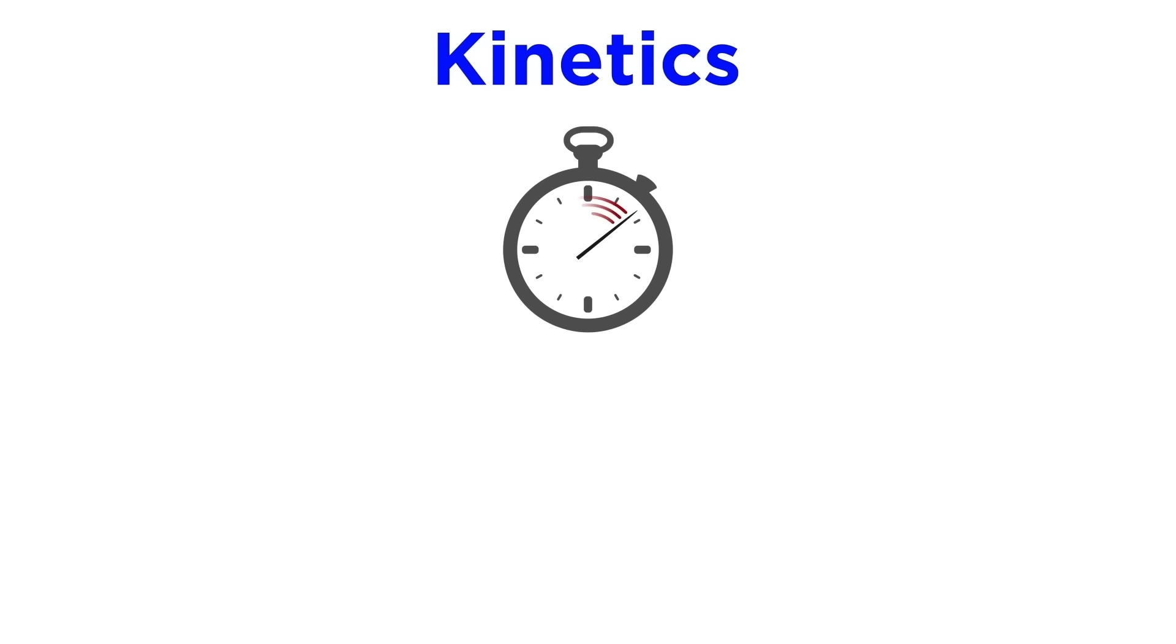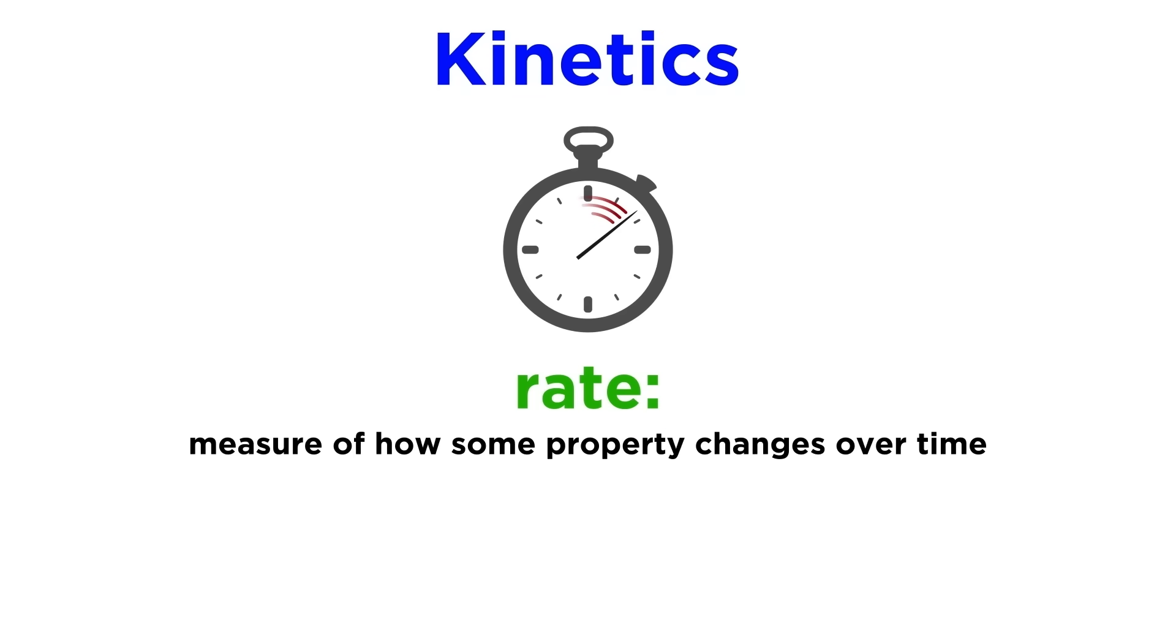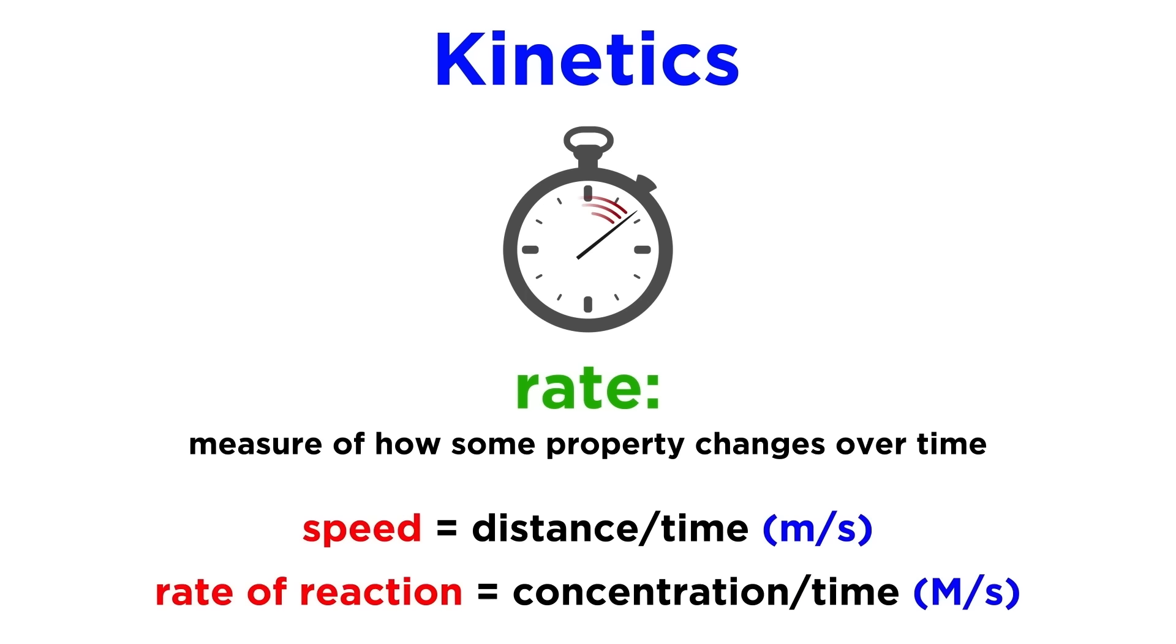There are many reasons why one reaction might happen in the snap of a finger, whereas another could take a year, and these timeframes determine how useful certain chemistry is to us. A rate is defined as the measure of how some property changes over time. Just the way that speed measures distance traveled per unit time, a rate of reaction measures the change in concentration per unit time. This means how much reactant is used up, or how much product is produced per unit time, which is usually measured in seconds.